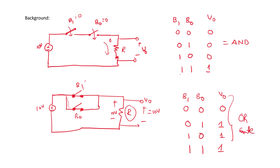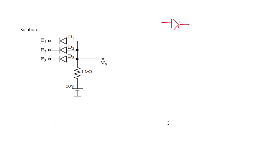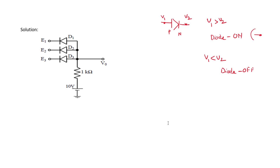In the problem, the diodes are ideal. This means if the voltage at the P terminal (anode) is greater than V2 (cathode), the diode is on and acts like a short circuit. If V1 is less than V2, the diode is off and acts like an open circuit switch.